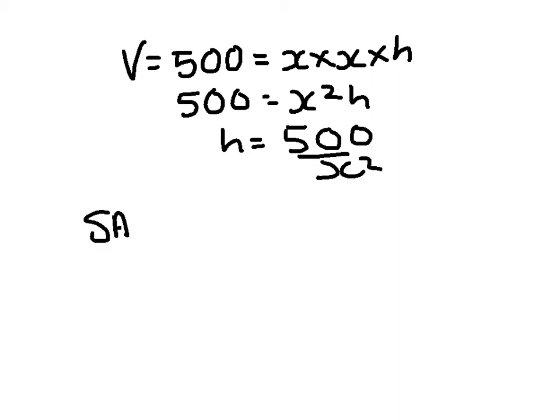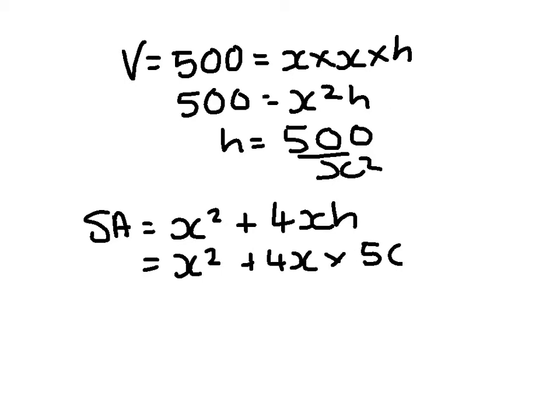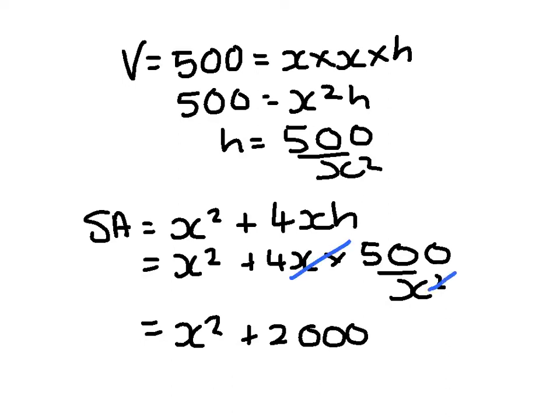The surface area of the tank is the base, which is x squared, plus the four rectangular sides, which are xh. I'm going to replace h by 500 over x squared, which gives an expression for the surface area of x squared plus 2000. This x is going to cancel with one of the x's on the bottom, so it's 2000 over x.